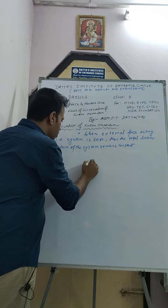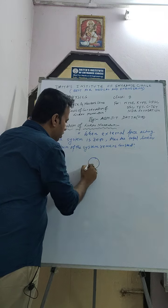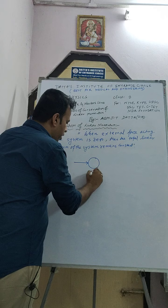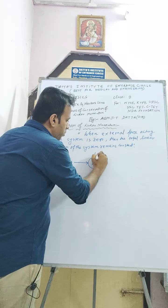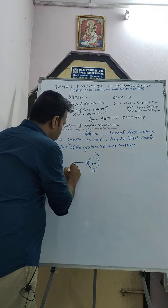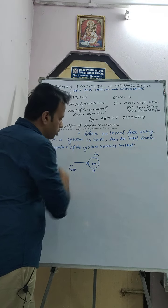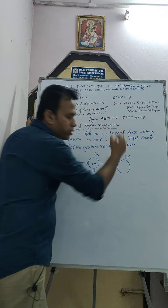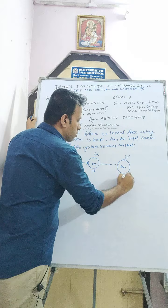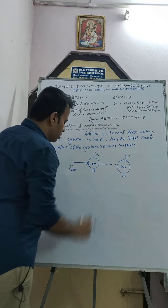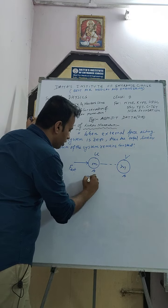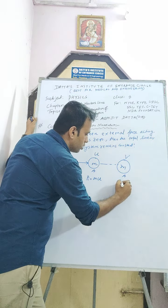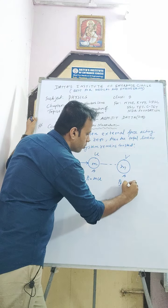Let's prove it. Suppose I consider one body here — this body is A, its mass is m, and its initial velocity is u. I am applying a force here — this is an external force — and its velocity increases to v. The mass will remain the same. So the initial momentum will be p_i = m × u, and the final momentum will be p_f = m × v.